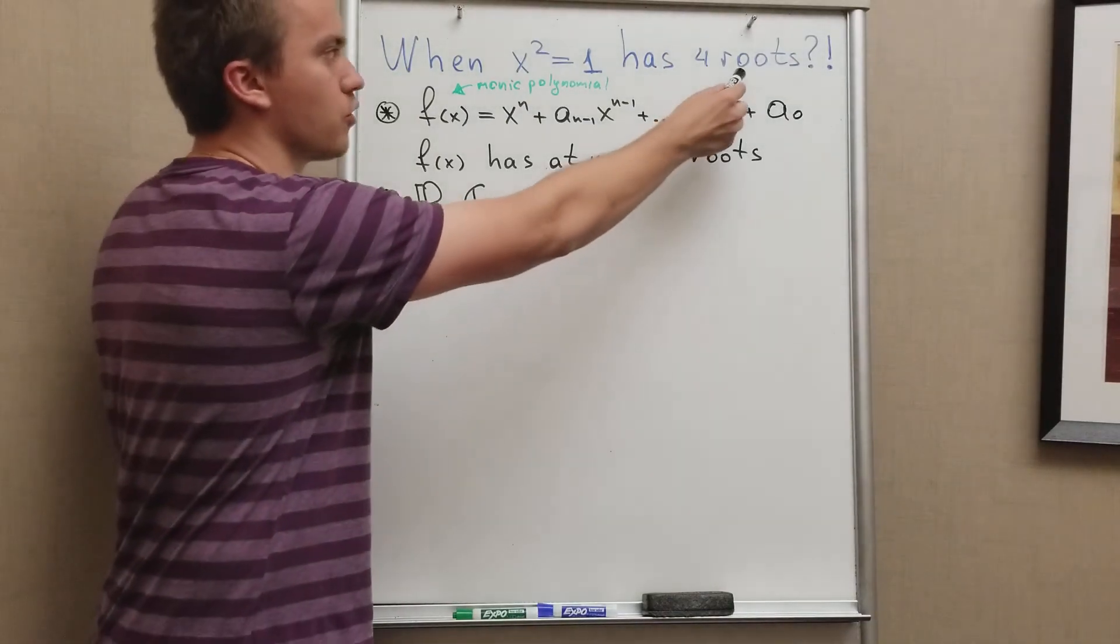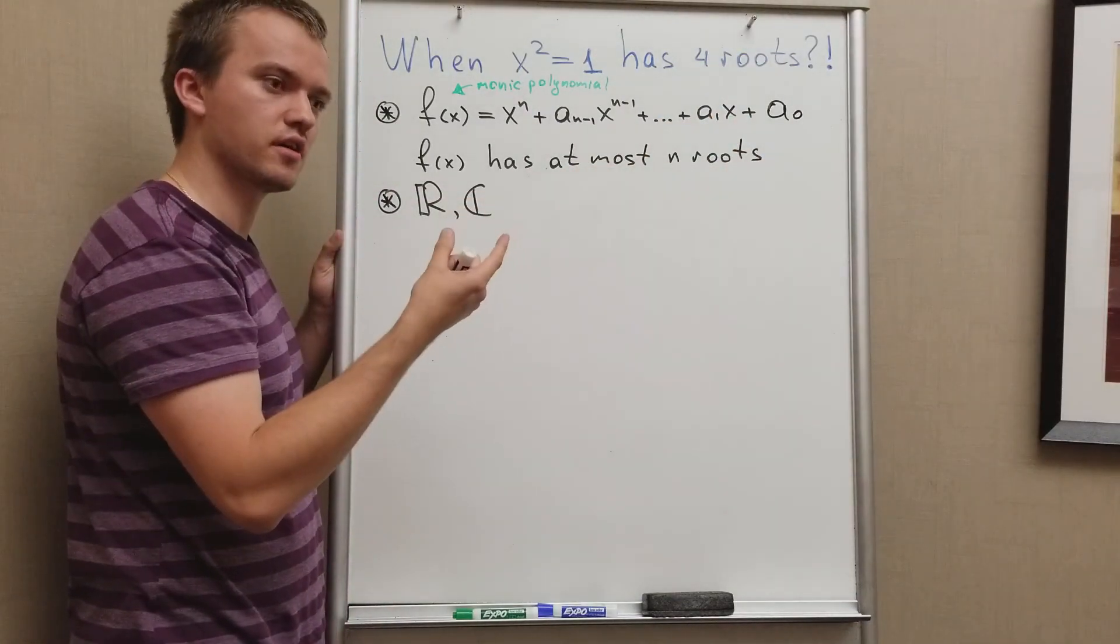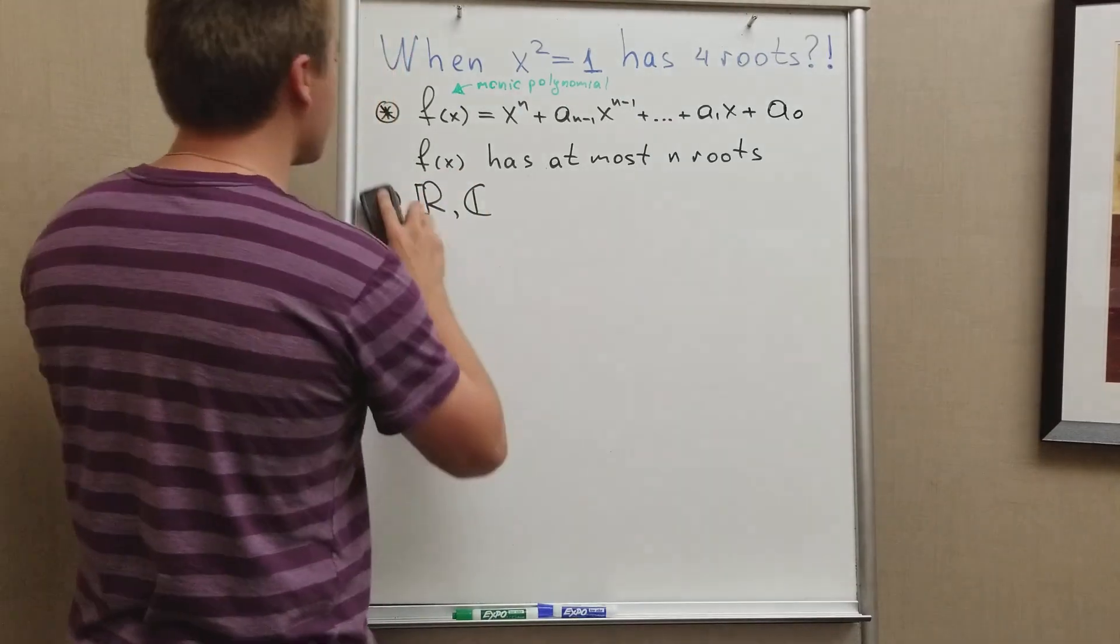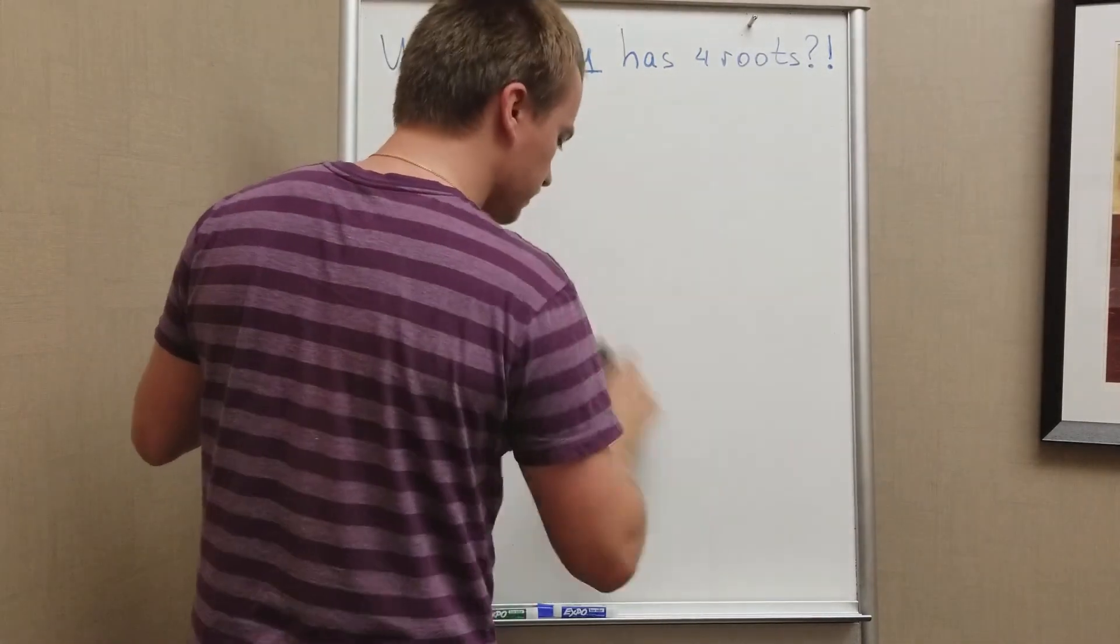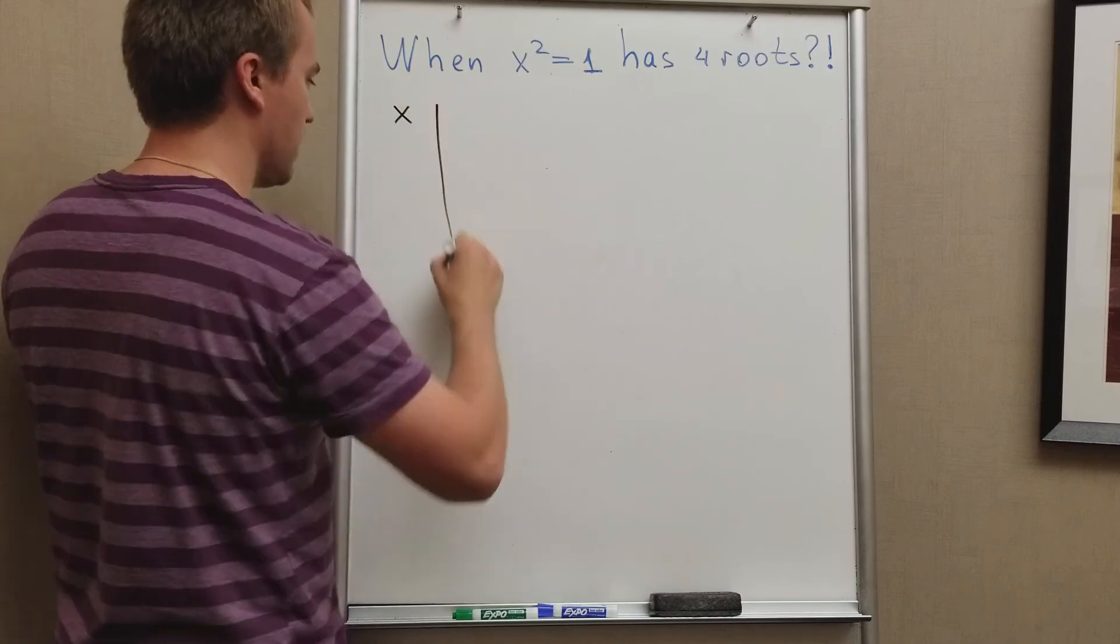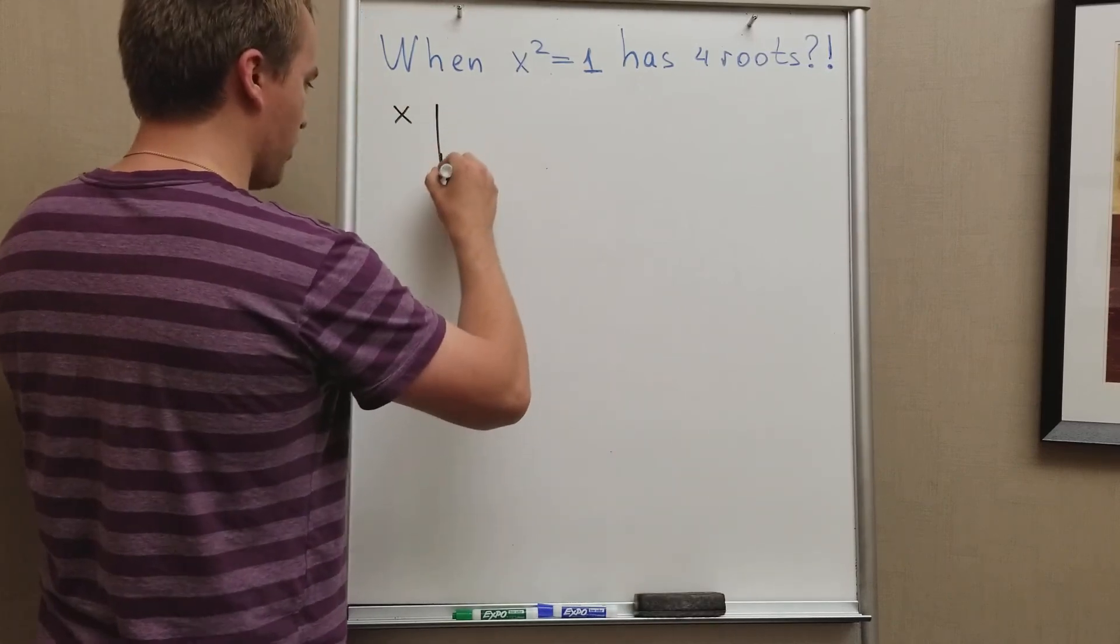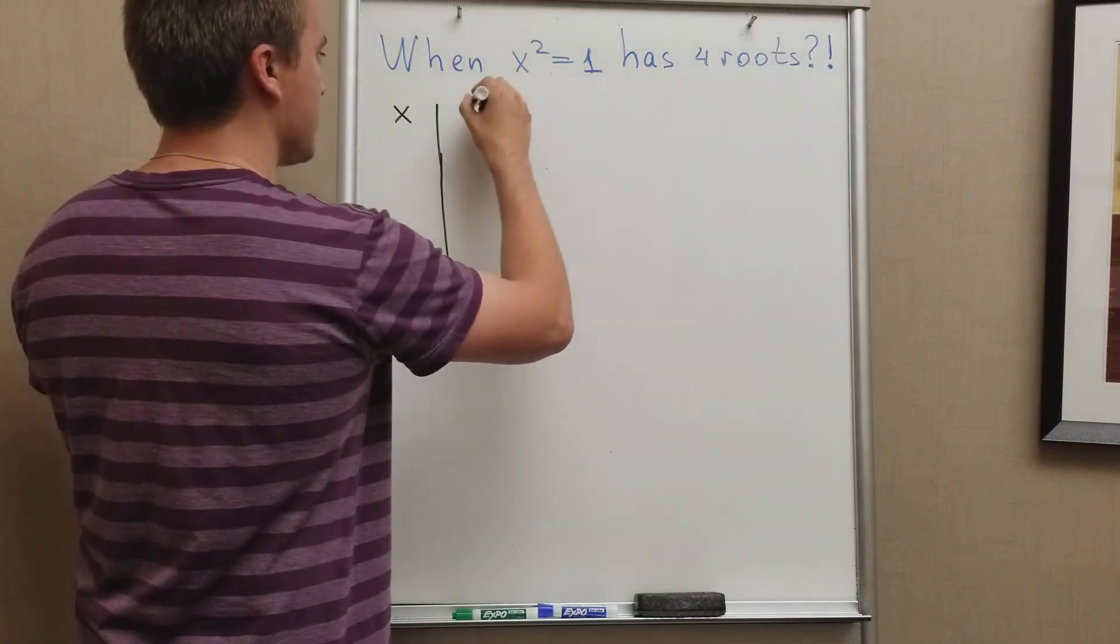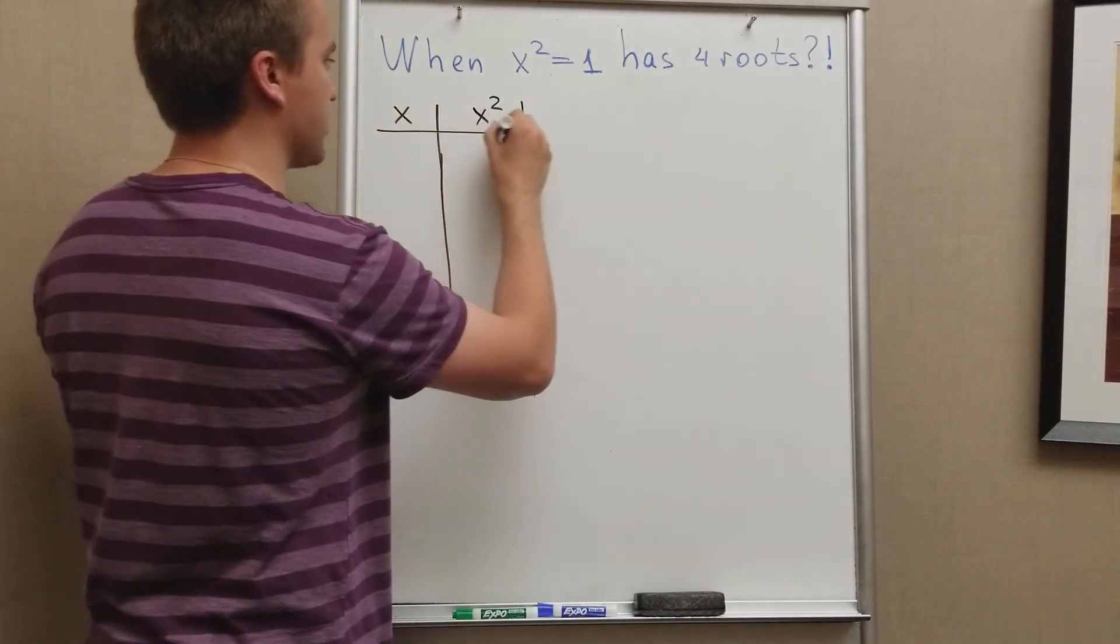So it means if I want to get four roots, I just need to change my algebraic object. So let's consider, let's make a table. X in your first column, and let's discover when our polynomial x squared equals one has four roots. And let's consider x squared in our second column, and you will figure out in a second why I'm doing this.